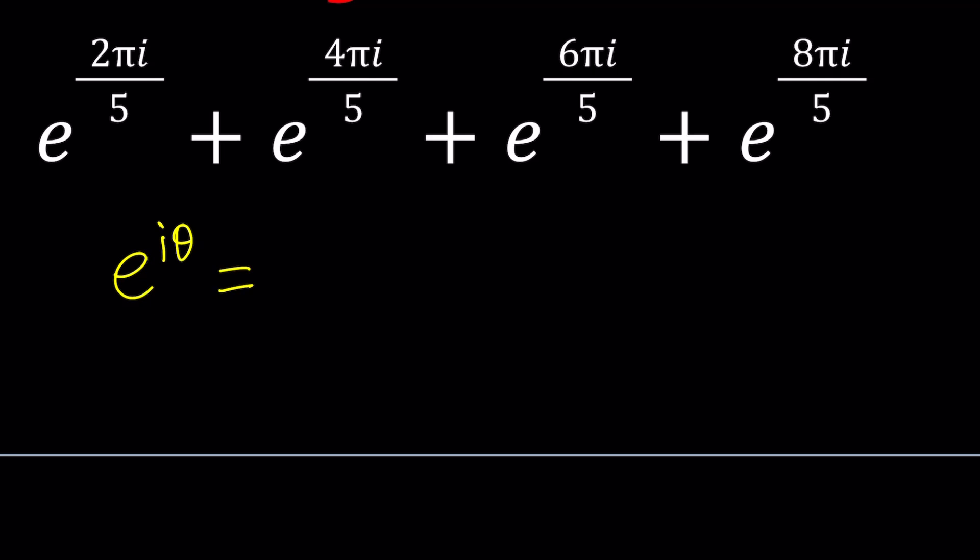You can look at the basics if you're new to complex numbers or need a refresher. e to the power iθ is cosθ plus i times sinθ. This is one of the most amazing, if not the most amazing equation in the world of mathematics. Beautiful. Because it connects trigonometry to exponentials, the imaginary to transcendentals and integers and so on.